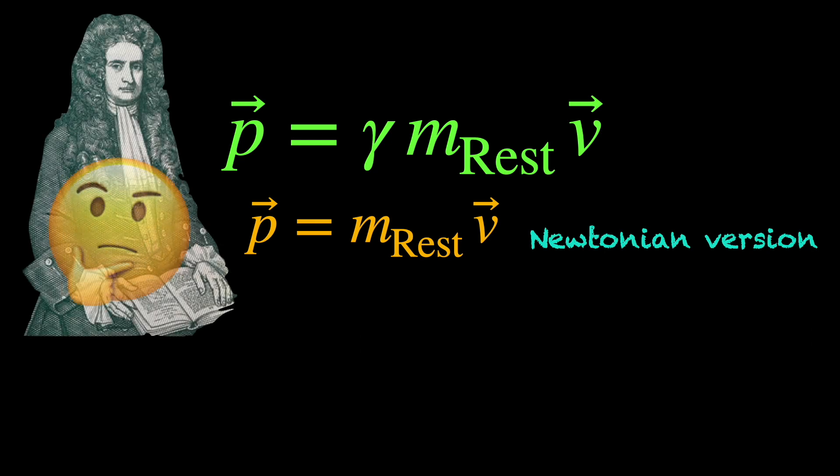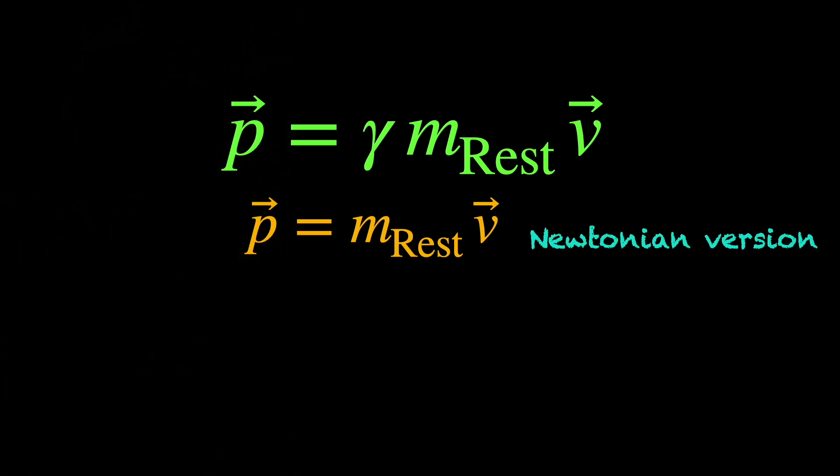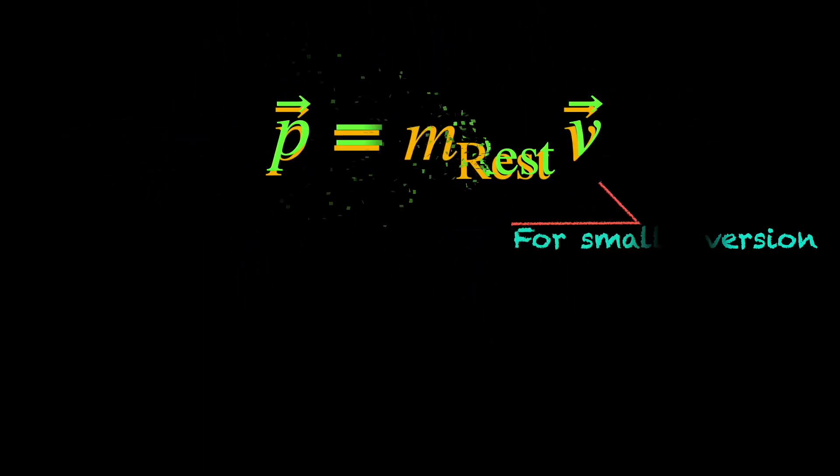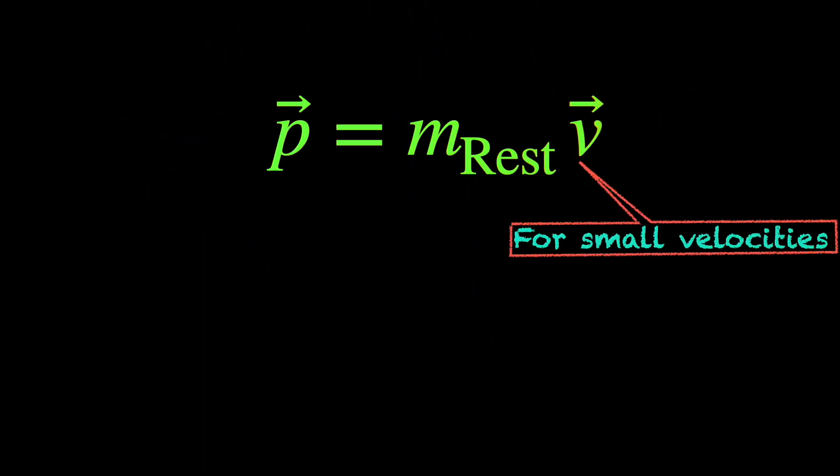Does this mean Newton got it all wrong? Not really, because this relativistic definition of the momentum vector boils down to his version for small velocities.